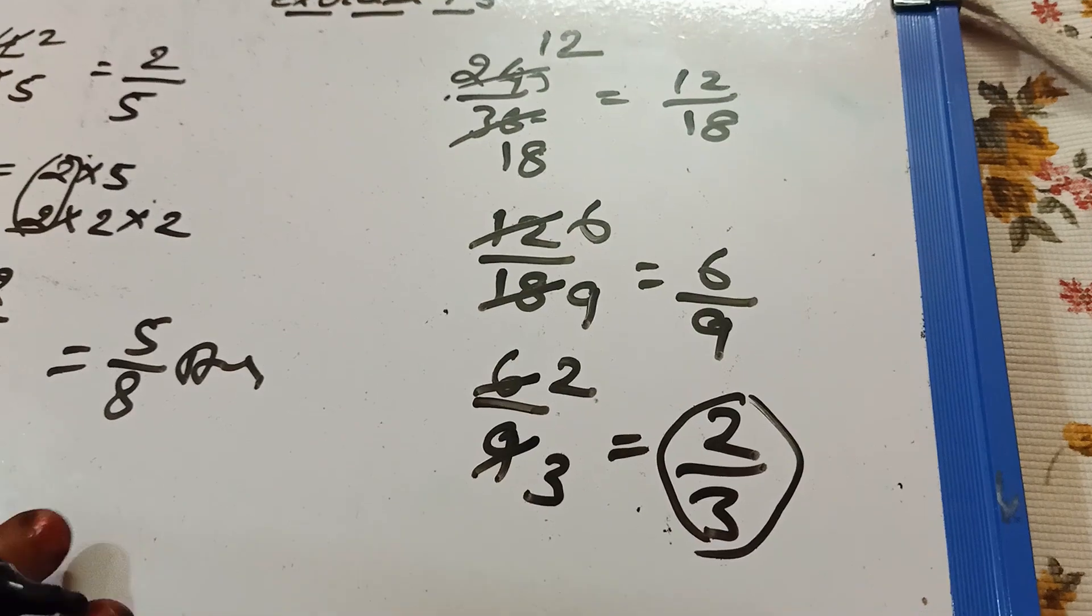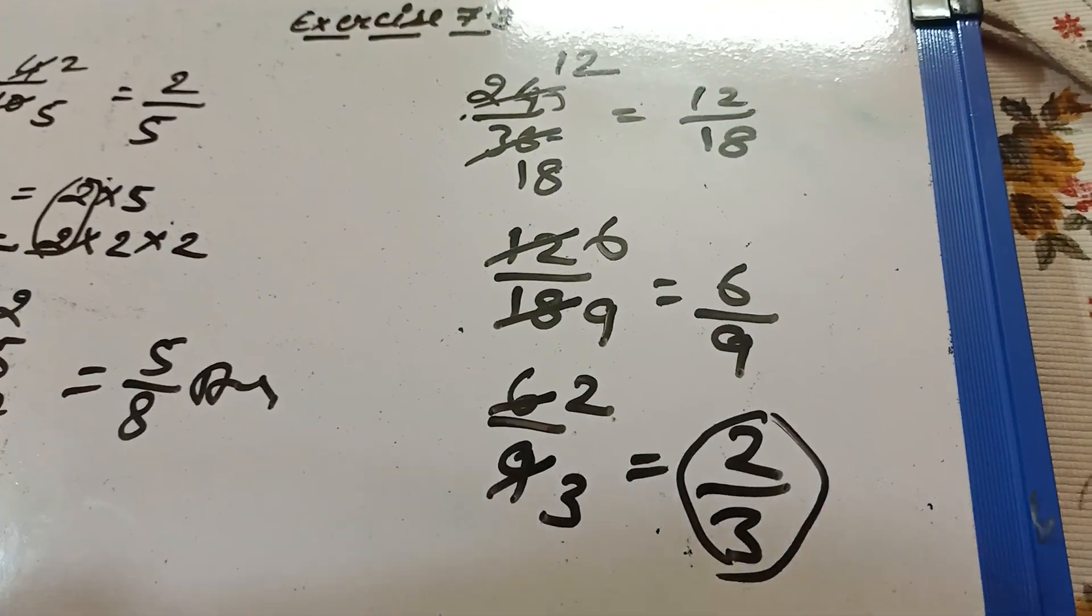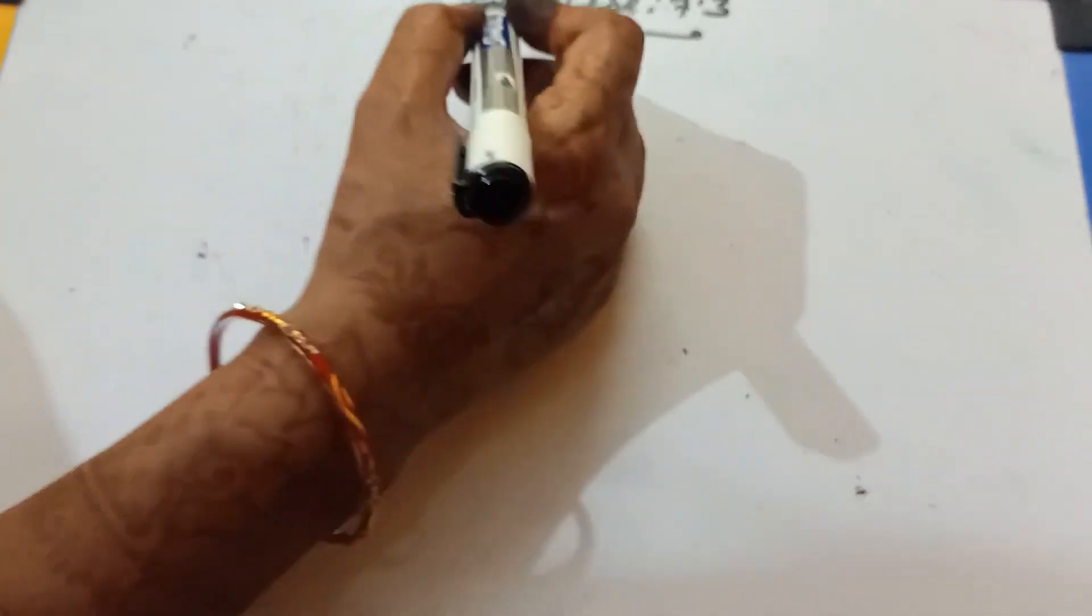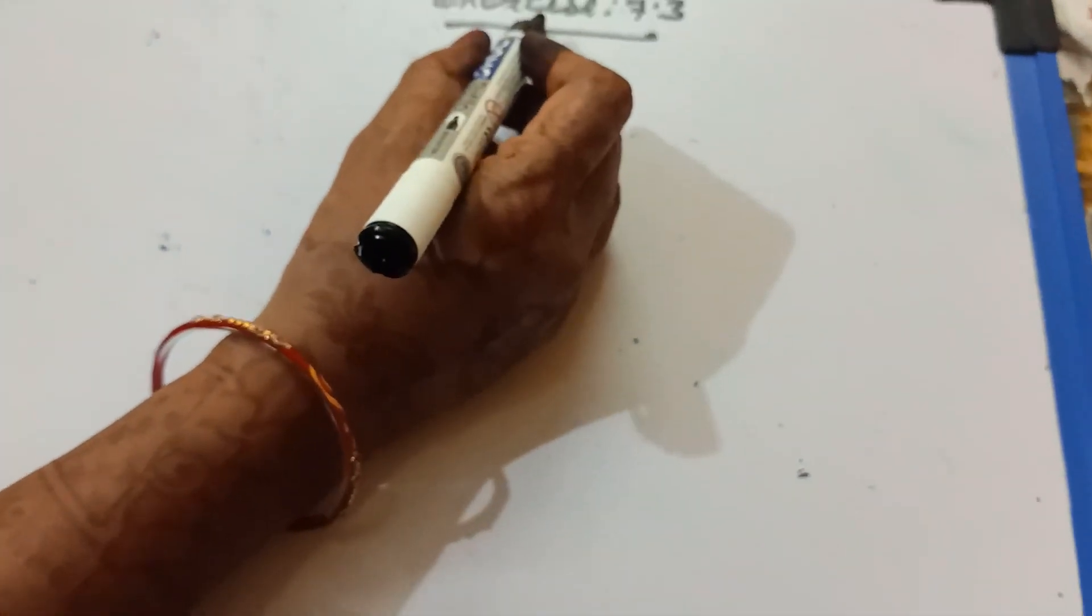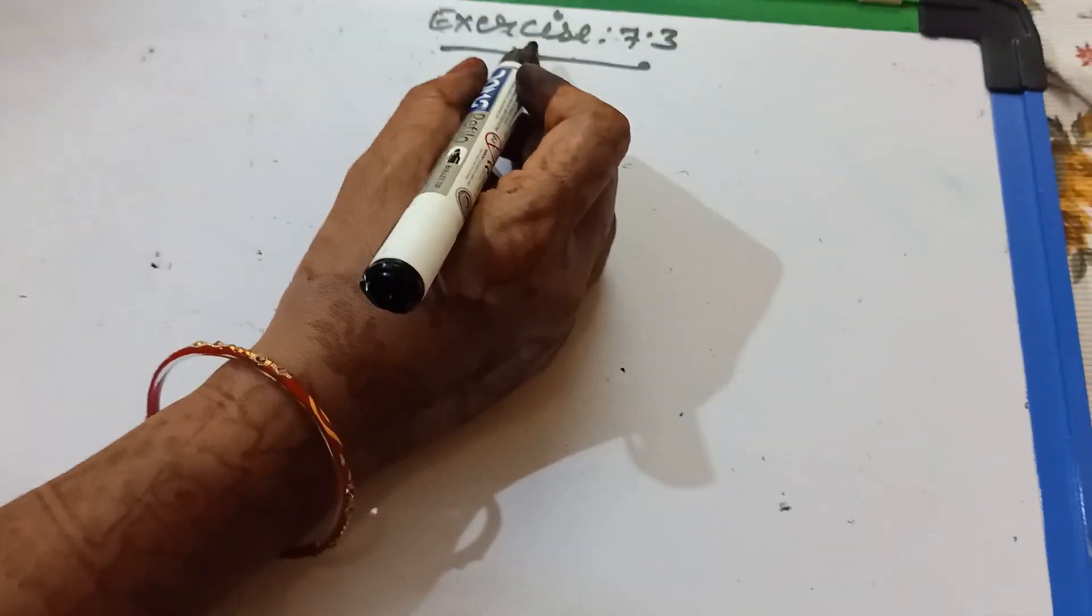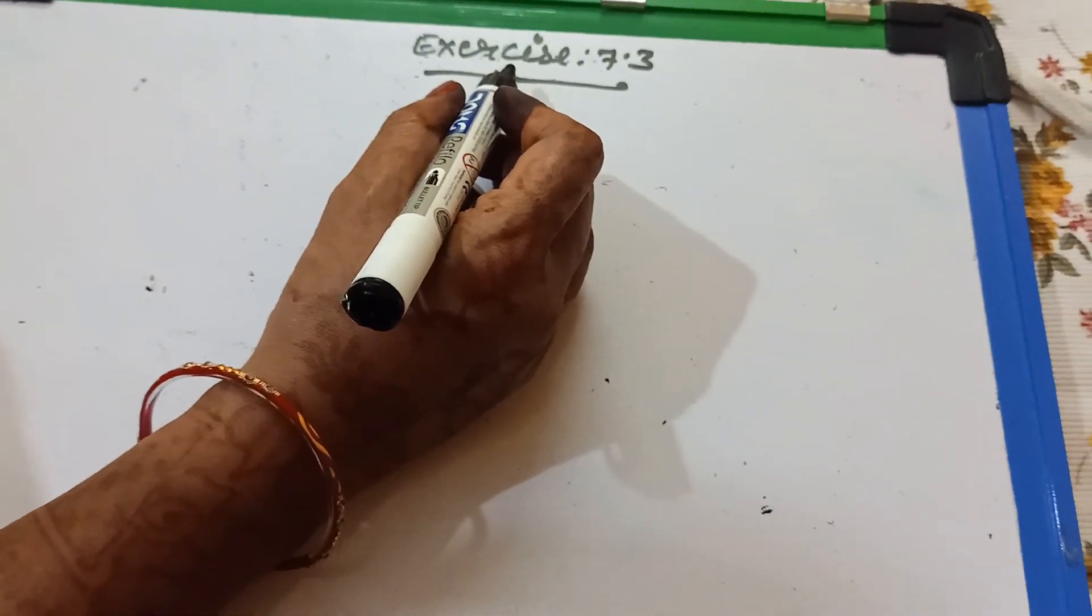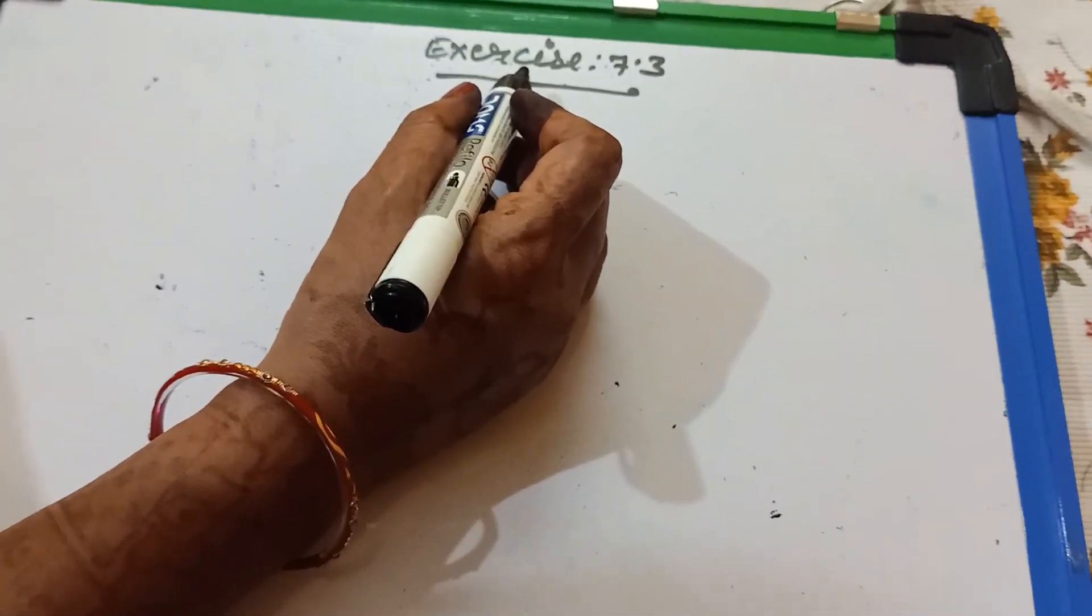Is it clear? Now look carefully in exercise 7.3. Look carefully in your textbook exercise 7.3. Question number 1 that is state whether the fractions are in their lowest term or not.